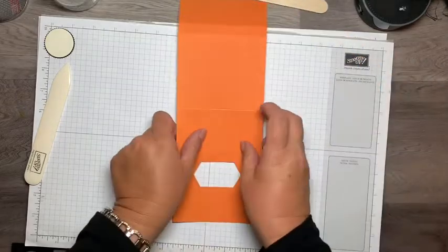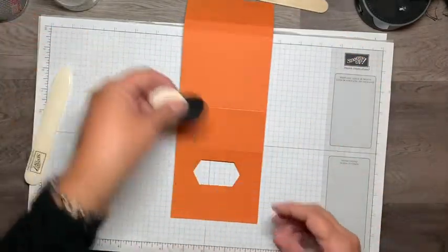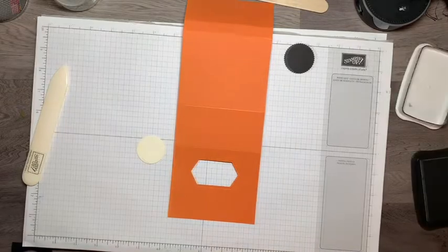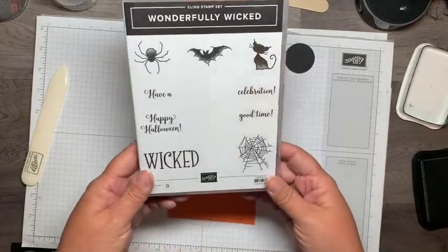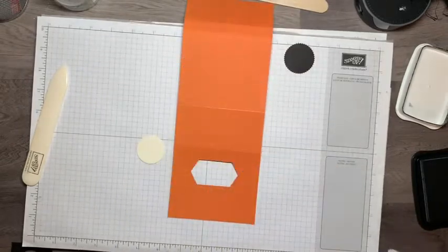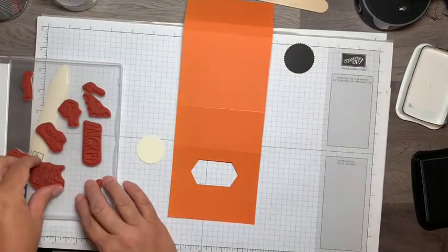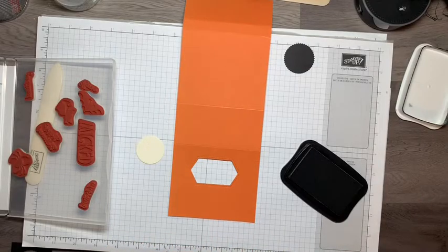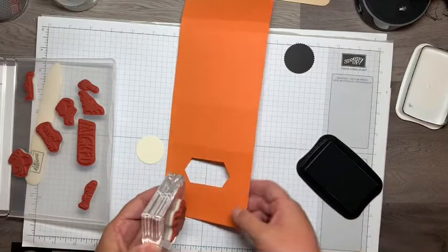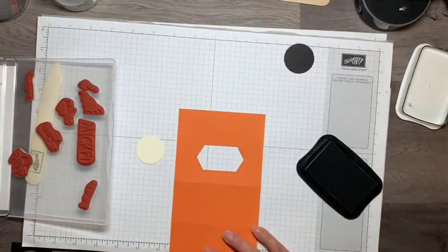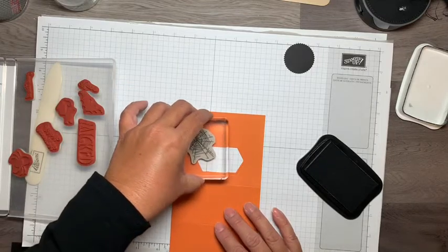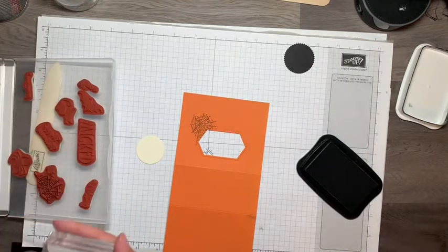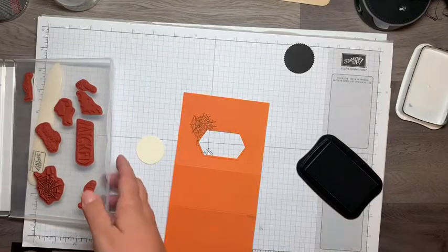Now that we have our Pumpkin Pie cardstock and the scalloped black circle, I'll set that aside. Taking some Memento black ink and using the Wonderfully Wicked stamp set—that just screams Halloween, doesn't it? I'm going to take the spider web stamp, ink it up with the black ink, and put this spider web just in the top here.